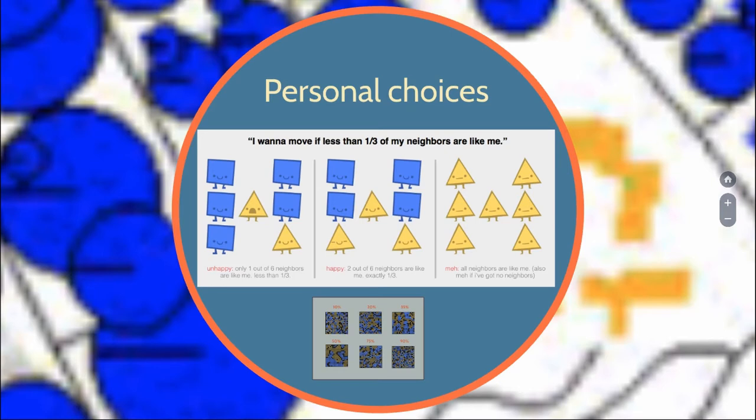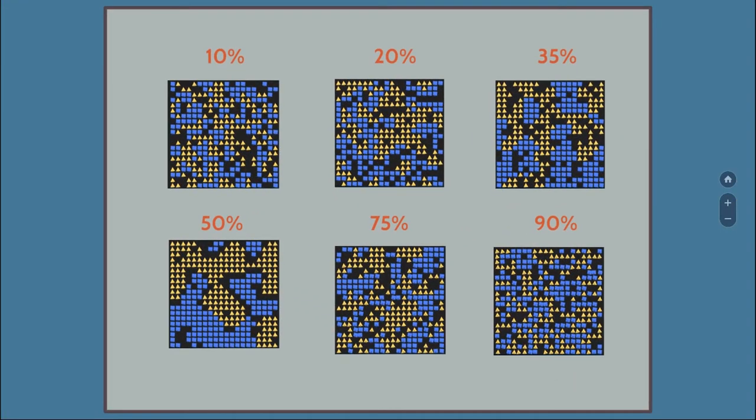They can be like, "I want my neighborhood to be at least one-third the same as me," or "I really want it to be more than half." If you then allow them to move every time they're unhappy—if they can change the position of their household—then you get some really interesting patterns. If their preference is for 10% of people like them living around them, they're pretty well mixed.